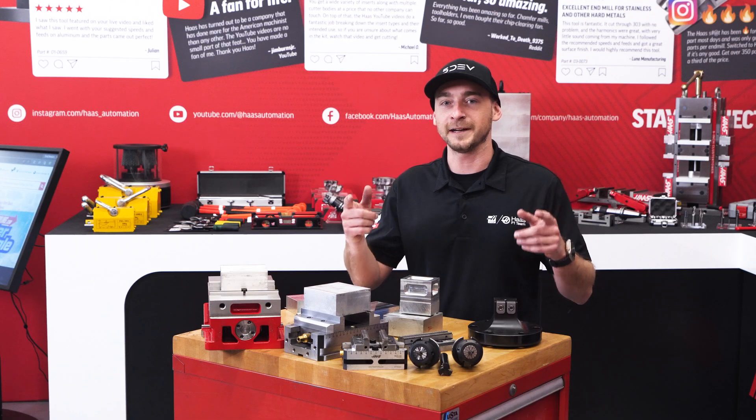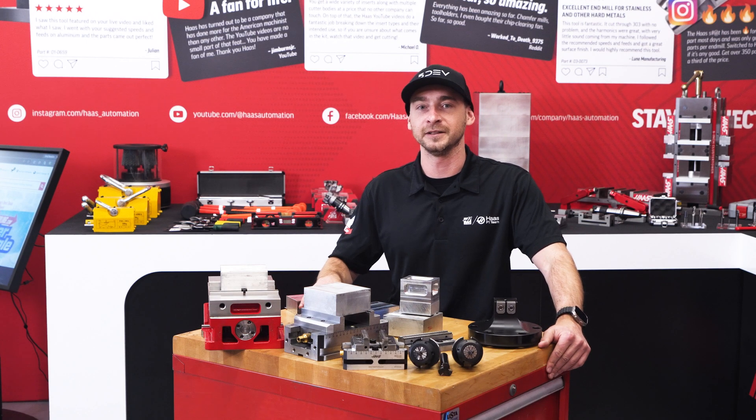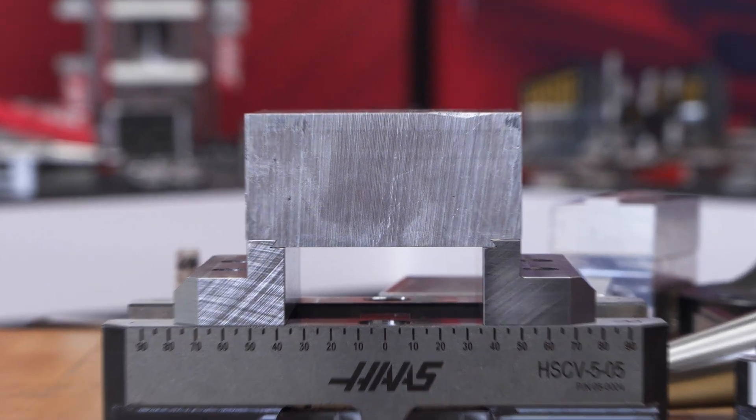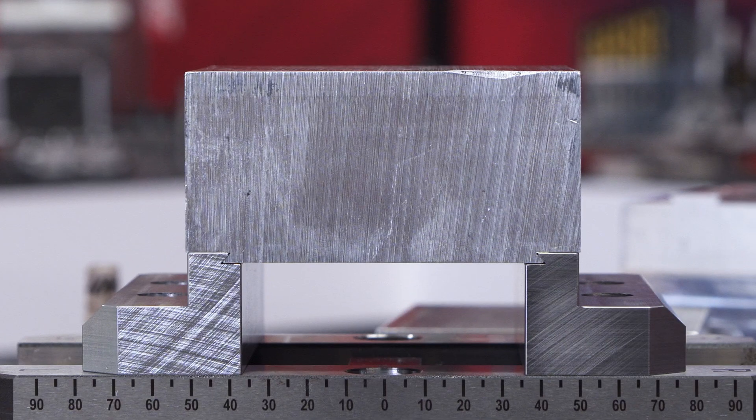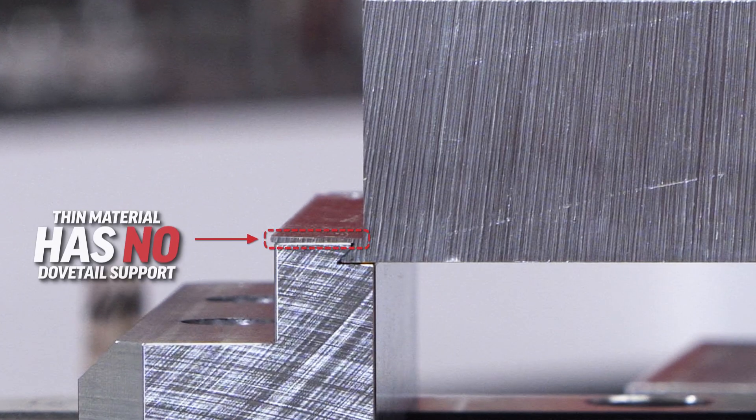Alright, there's one final thing we got to talk about and that's making sure we have enough support material to keep the dovetail rigid. If I cut a dovetail like this, but my finished part looks like this, you can see that I've lost almost all the rigidity and support I get from the top of the dovetail.